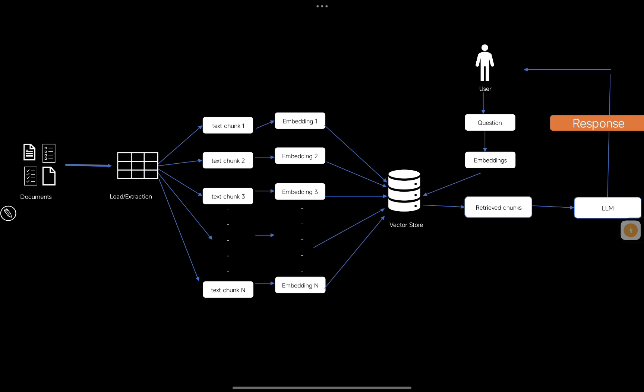There are two phases: retrieval, where you retrieve relevant chunks based on the user question, and generation. In a typical RAG architecture, we use the same chunk for both retrieval and generation. That can be an issue when improving context relevancy, because the LLM needs a larger chunk or larger context to generate a better answer.